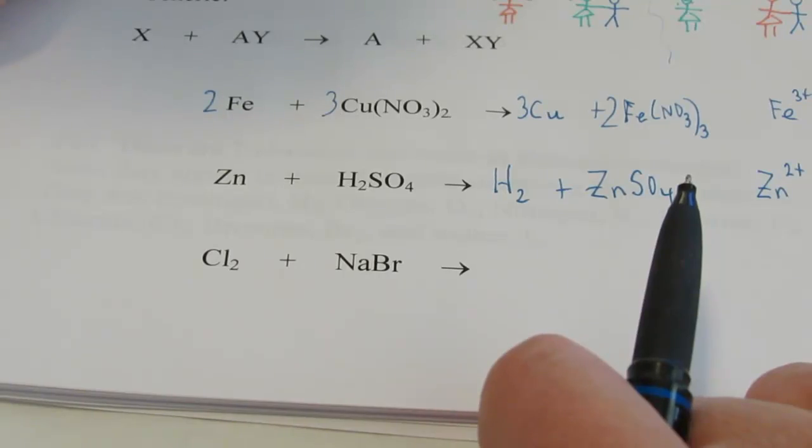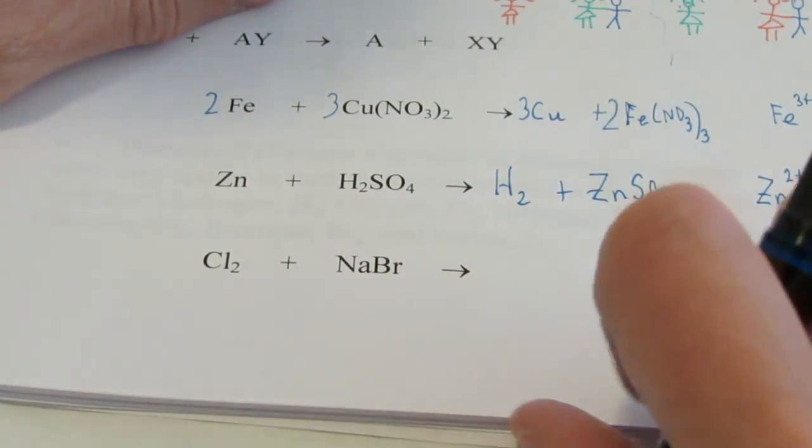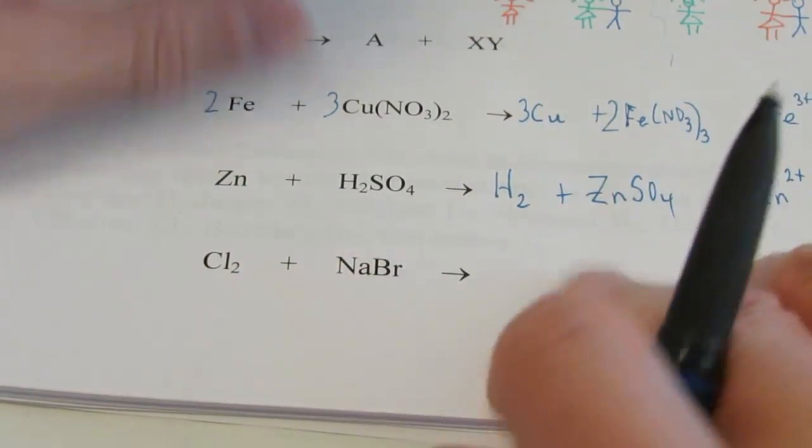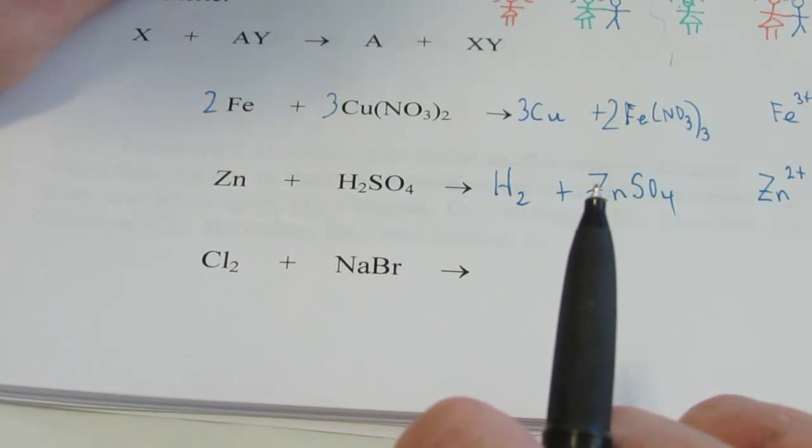Now try the next one. And I really want you to try this, because I'll tell you what, kids are going to make mistakes on this one, they do it all the time. So try it, see if you can beat the odds. Maybe you'll be one of the few that get this one right. So pause and try it, and then turn it back on and see how you did.